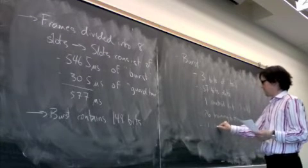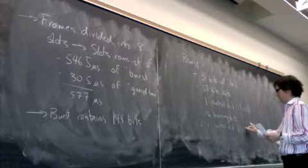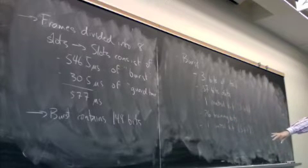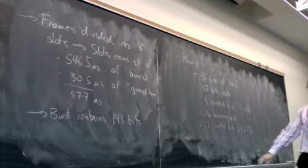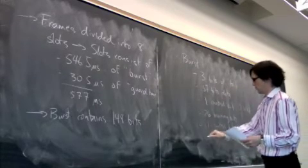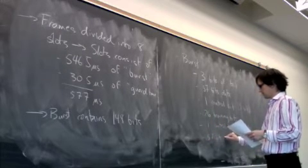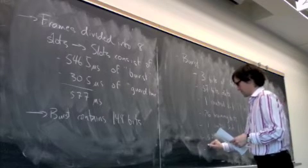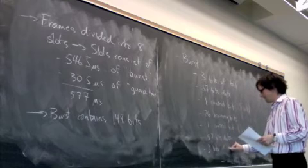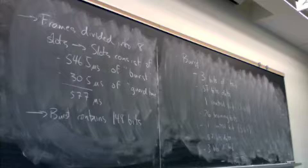Following the training bits, another control bit — the S-bit. These are distinct, by the way, so there's actually a symmetrical structure to the burst, but it's not like this end is the mirror image of that one — these can be different from the ones at the beginning. Then another 57 bits of data, and then three bits of tail, and that's a total of 148 bits.